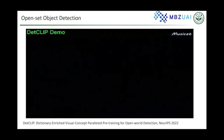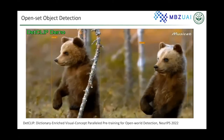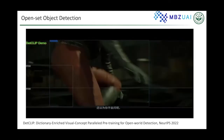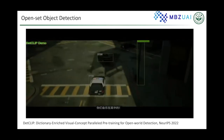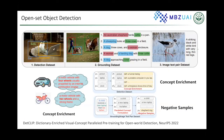Our fine-grained cross-modal alignment training can also be used for open-set object detection. Most object detection models can only recognize and localize a predefined number of categories. We propose a grounding formulation of open-world detection that utilizes detection, grounding, and image-text pair datasets for pre-training. We propose a new model named DeckCLIP, enriched with a concept dictionary and a parallel pre-training method for open-world detection.